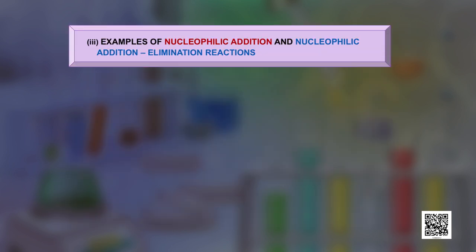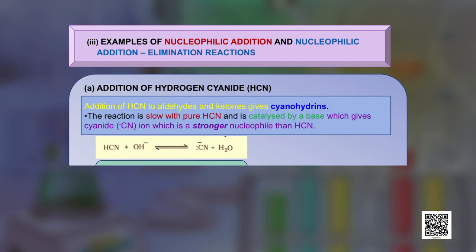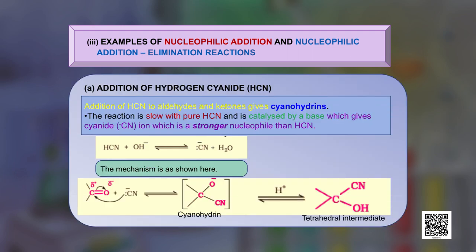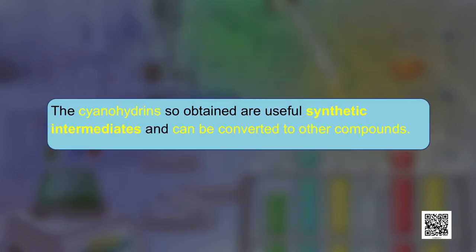The first nucleophilic addition reaction is addition of hydrogen cyanide (HCN). Addition of HCN to aldehydes and ketones gives cyanohydrins. This reaction is slow with pure HCN and is catalyzed by a base, which generates the cyanide ion — a stronger nucleophile than HCN. The mechanism proceeds through a tetrahedral intermediate to finally give the cyanohydrin. Cyanohydrins are very useful synthetic intermediates convertible to many other compounds.